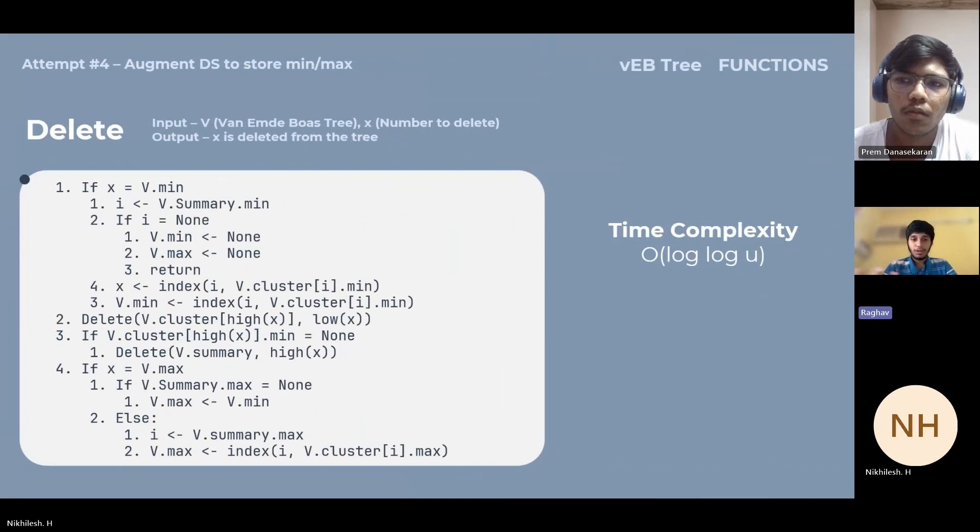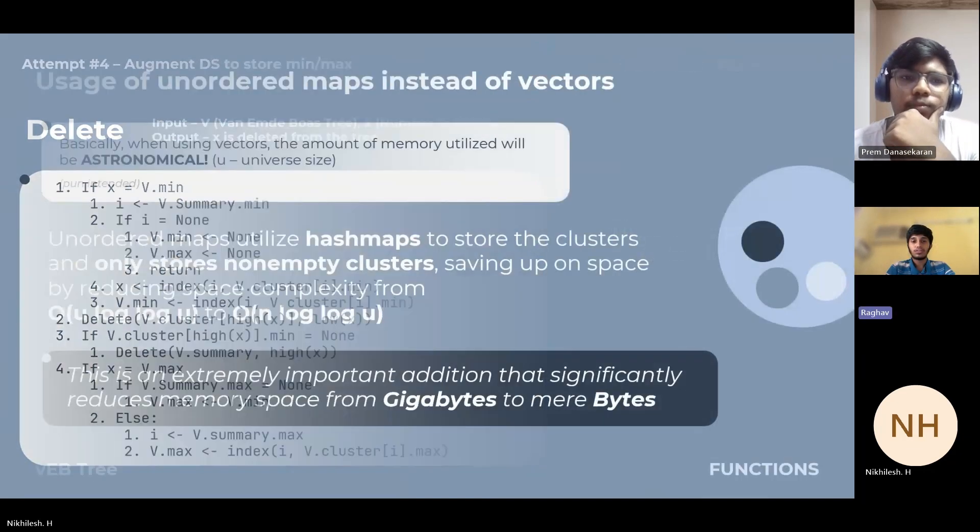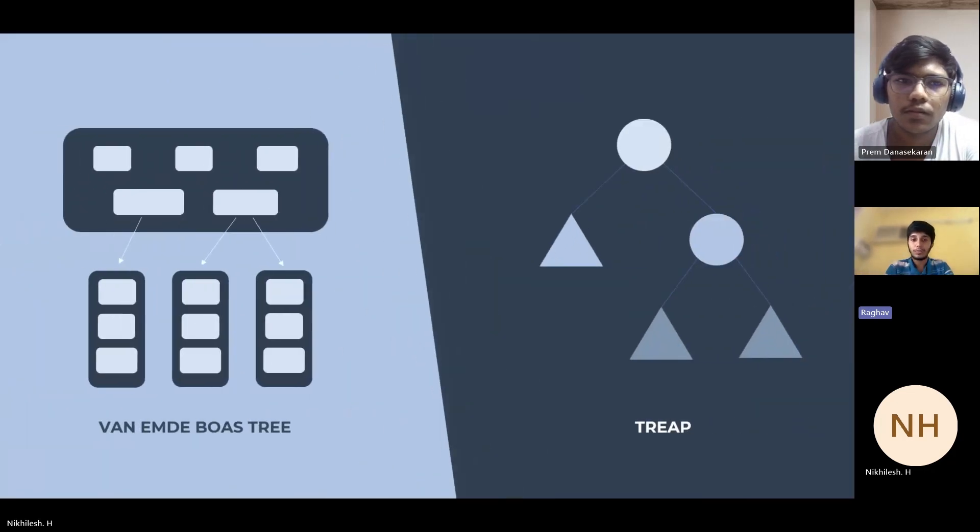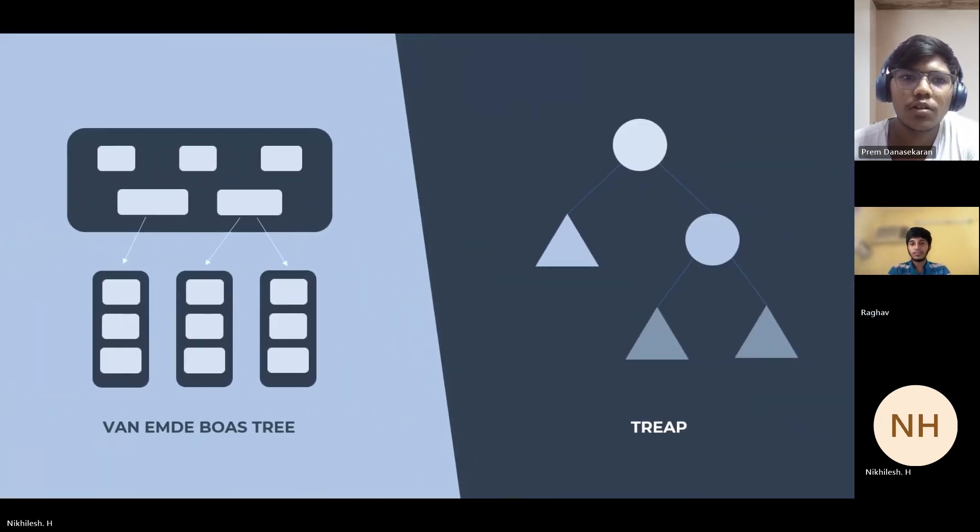When it comes to deletion, it's the opposite of the insertion part where you again have two recursive calls to delete the particular number. The usage of unordered maps instead of vectors: basically unordered maps utilize hash maps wherein you store only the non-empty clusters and remove the empty ones. This reduces the space complexity from O(u log log u) to O(n log log u), which is the best.